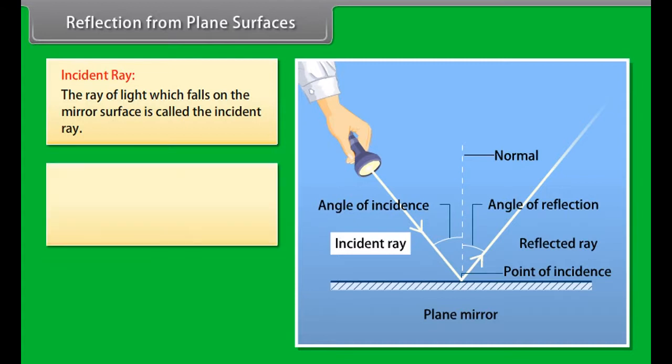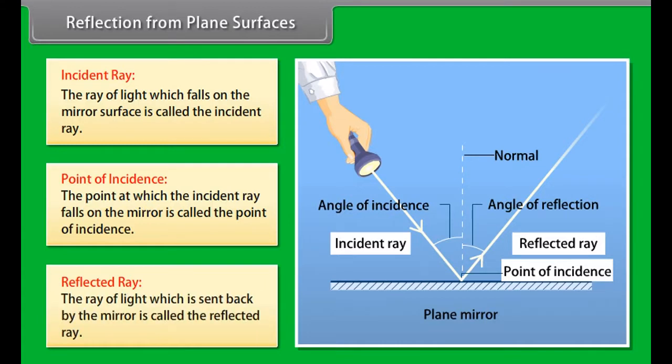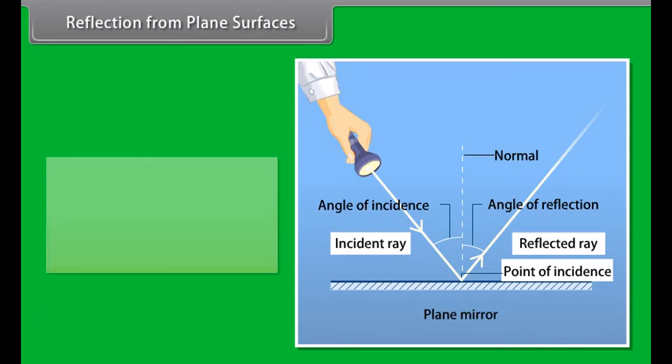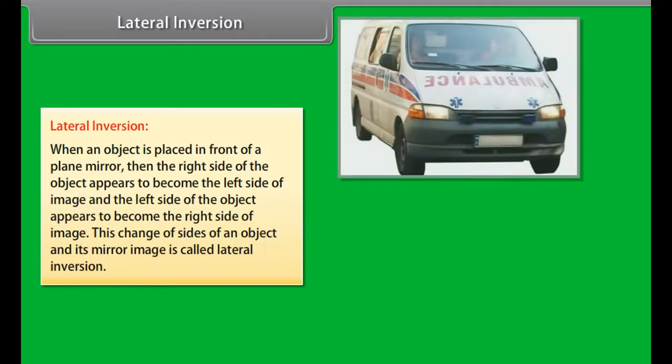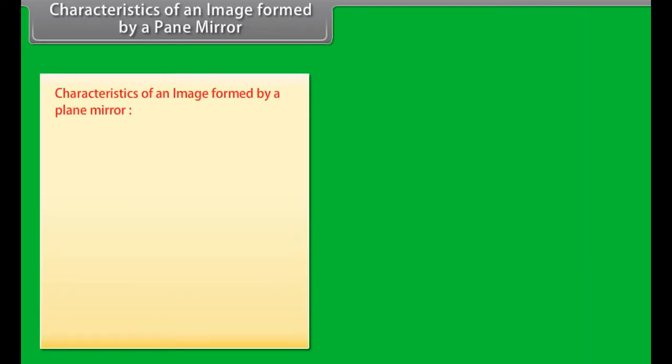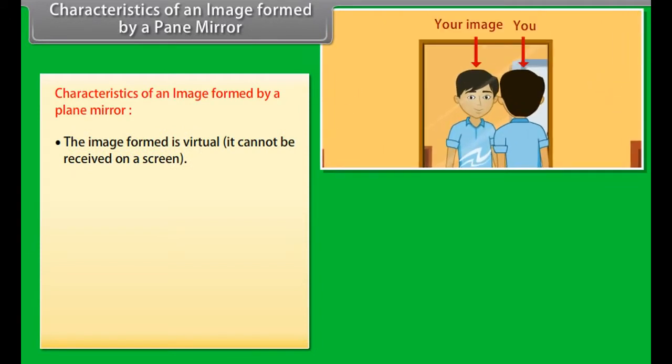Meaning of important terms: Incident ray - the ray of light which falls on the mirror surface. Point of incidence - the point at which the incident ray strikes the mirror. Reflected ray - the ray of light which is sent back by the mirror. Normal - a line at right angle to the mirror surface at the point of incidence. It is perpendicular to the mirror at the point of incidence. Lateral inversion.